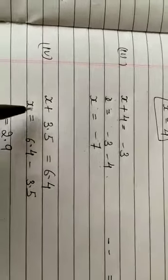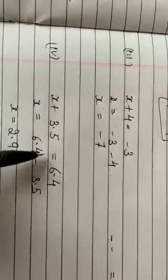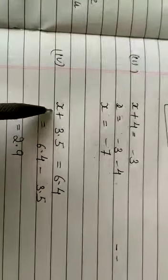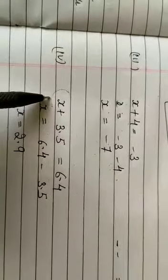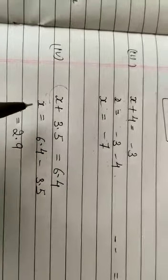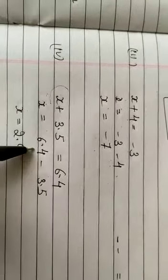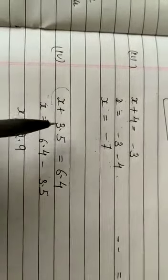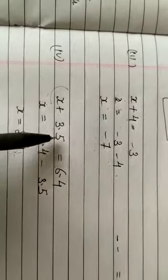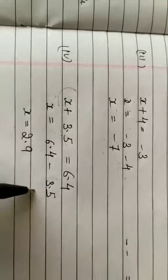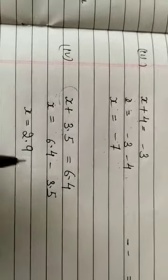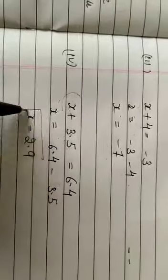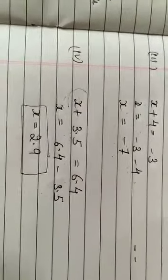Fourth part: x plus 3.5 equals 6.4. We have to find the value of this variable x. We write x equals 6.4 minus 3.5. When we take 3.5 to the other side of the equation, it becomes negative. We get x equals 2.9. This is the value of x.